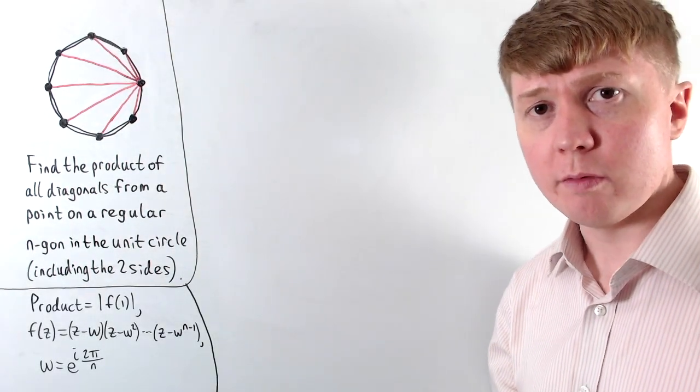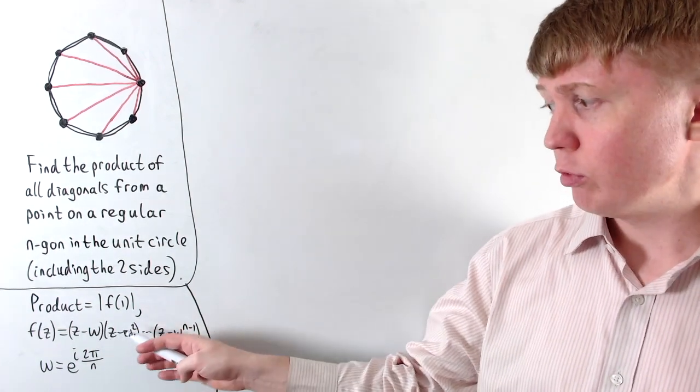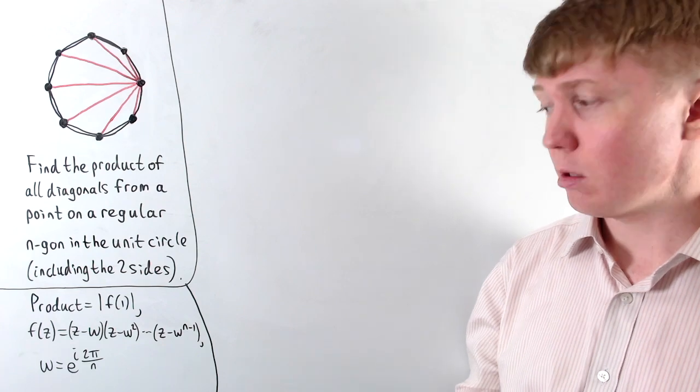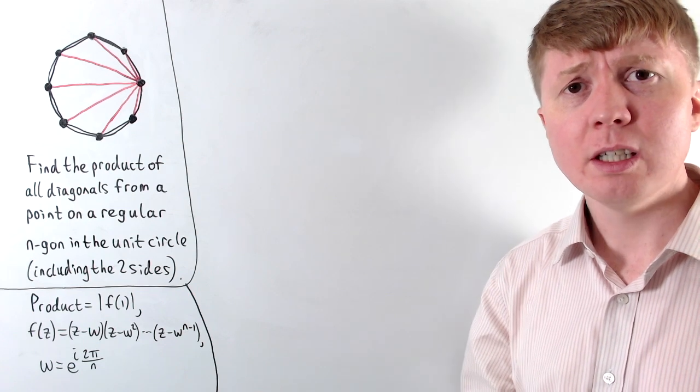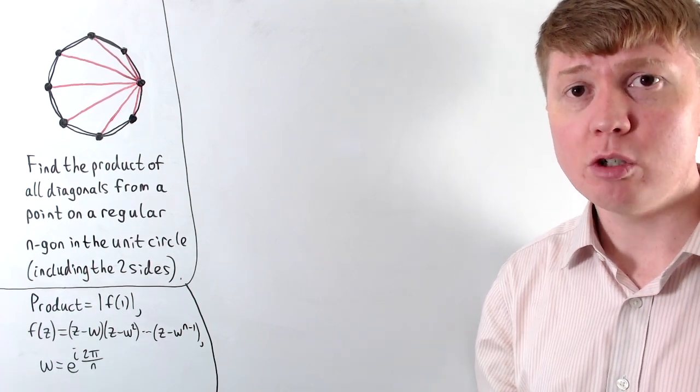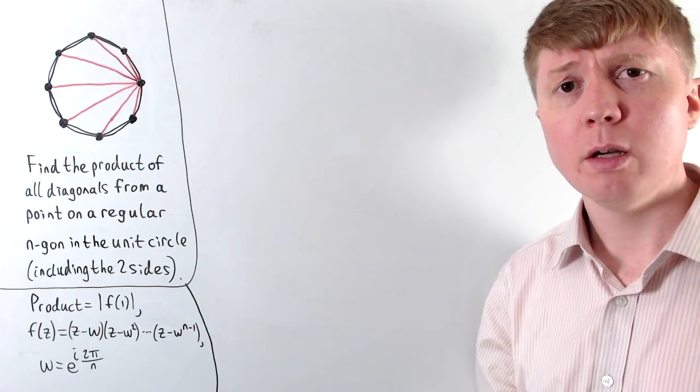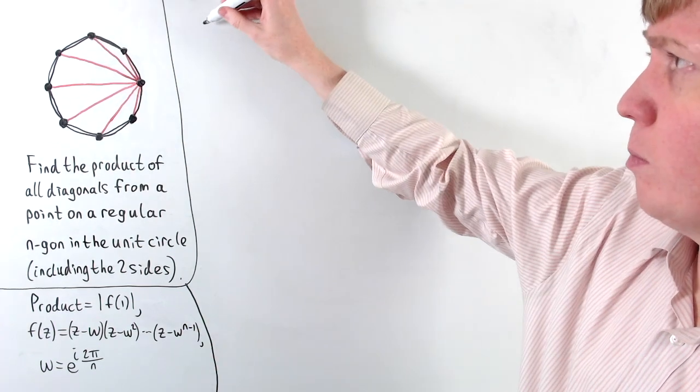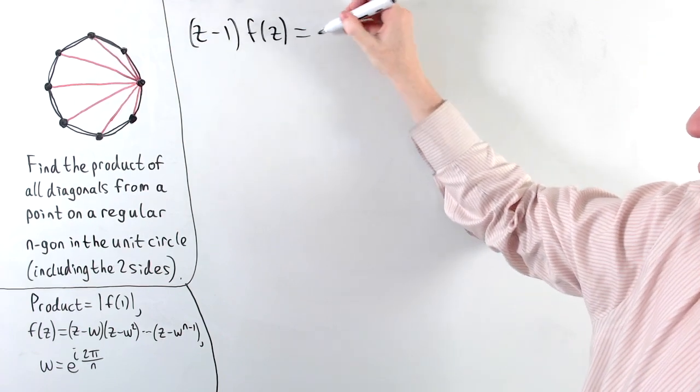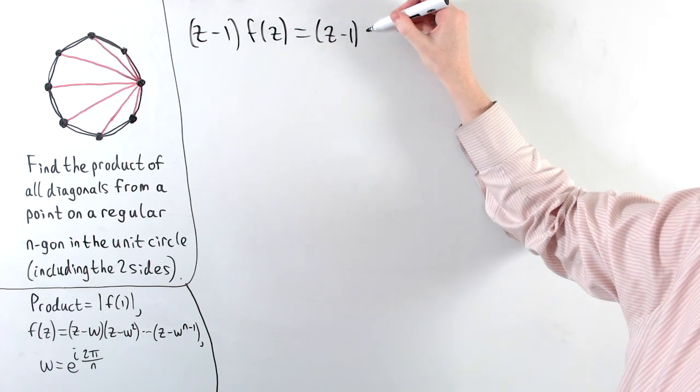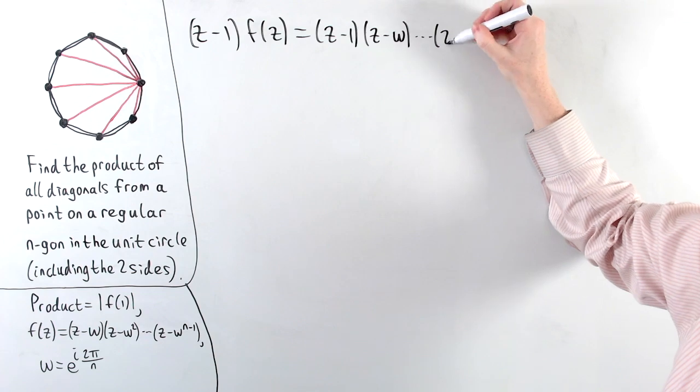And now if we think about the roots of our polynomial f of z, we've got a root when z is omega, we've got a root when z is omega squared, and so on. So we actually get all of our roots up to z is omega to the n minus 1. These are all of our nth roots of unity. The only one we're missing is z equals 1. But we can actually introduce this just by multiplying f of z by z minus 1.